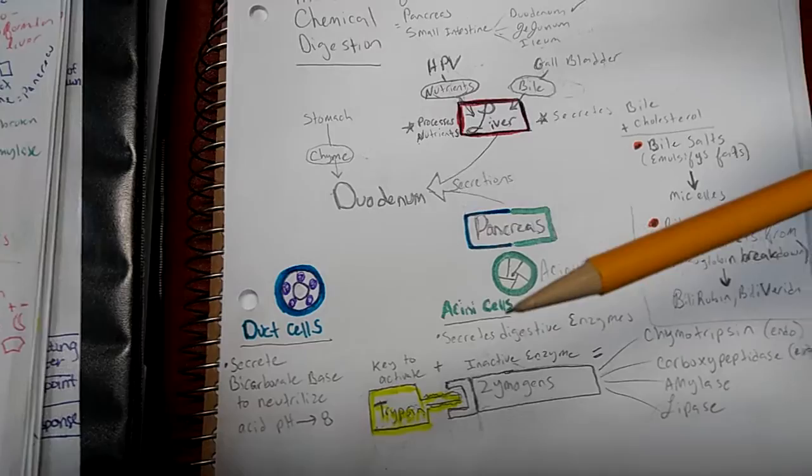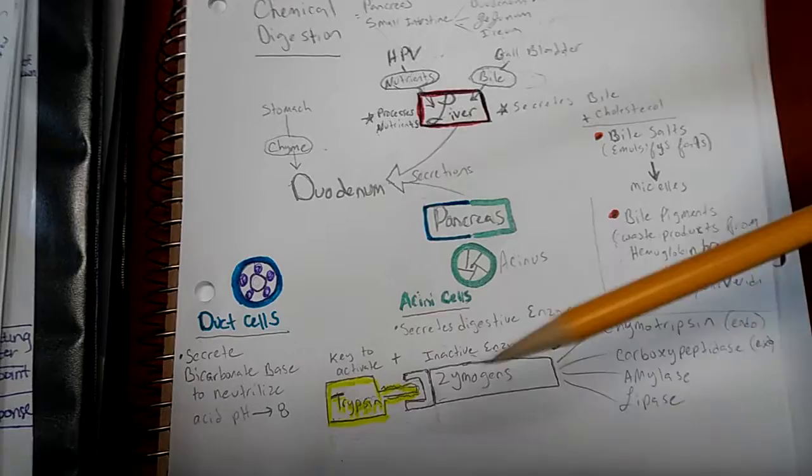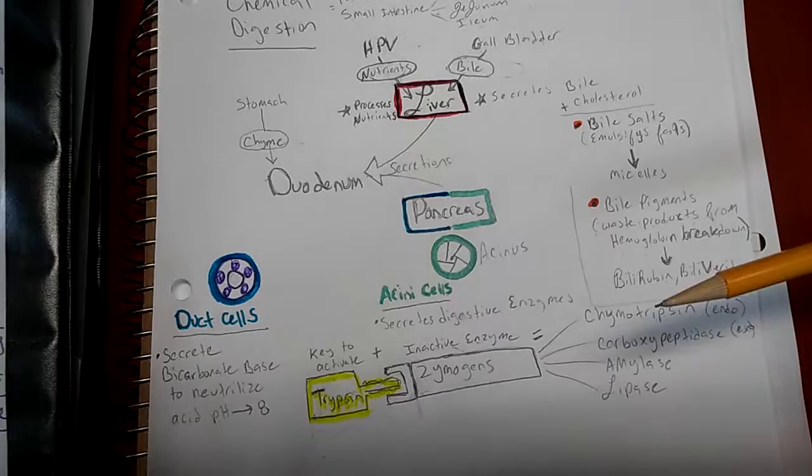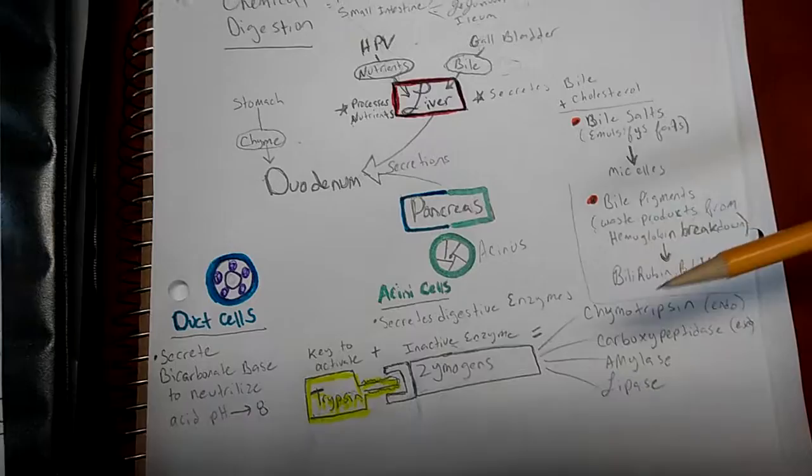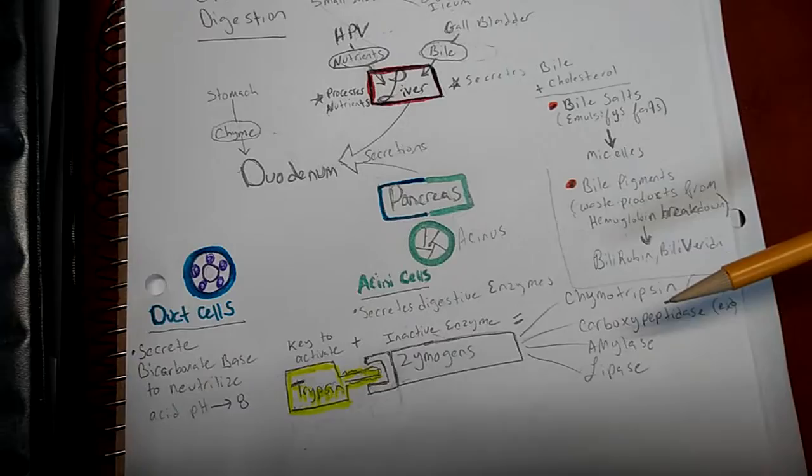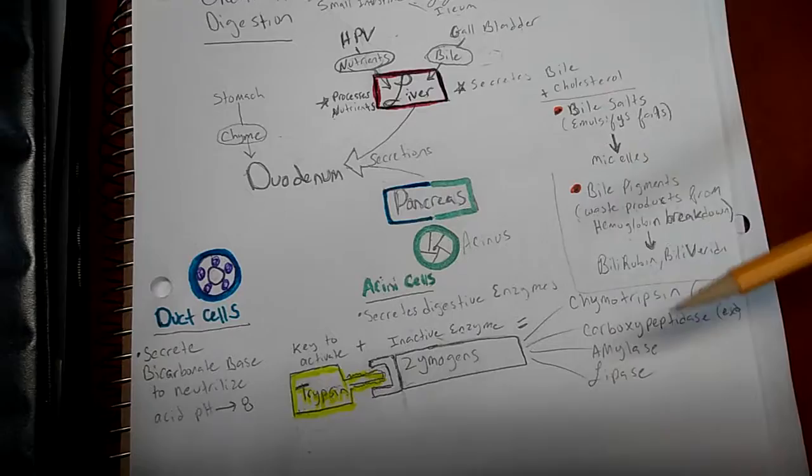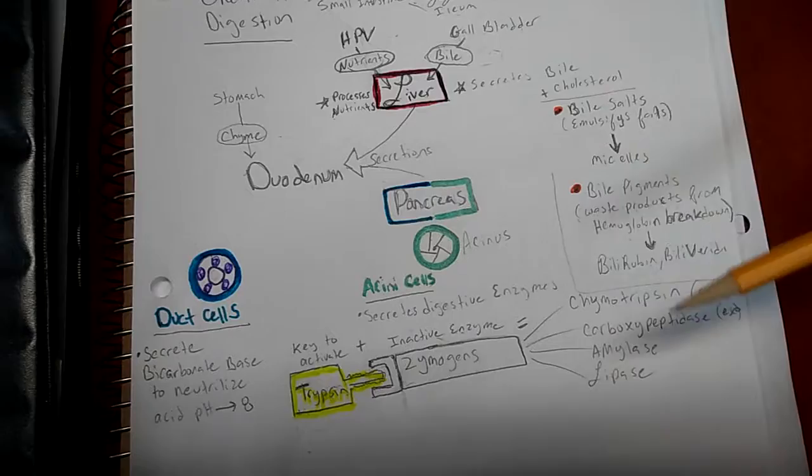Trypsin is secreted by the pancreatic acinar cells. Once trypsin activates the zymogens, it activates four other enzymes: chymotrypsin, which breaks down proteins into peptides, and carboxypeptidase, which breaks down peptides by the C terminal.